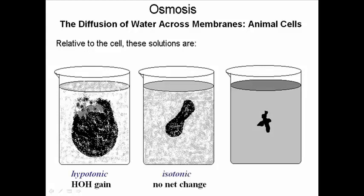A cell in isotonic solution is in a solution whose solute concentration is comparable to that in the cytoplasm, and so there will be no net movement of water into or out of the cell, and so the cell will remain in its normal shape.